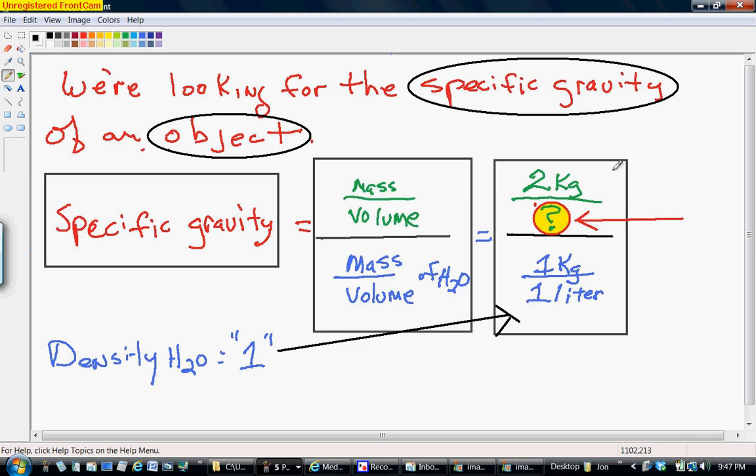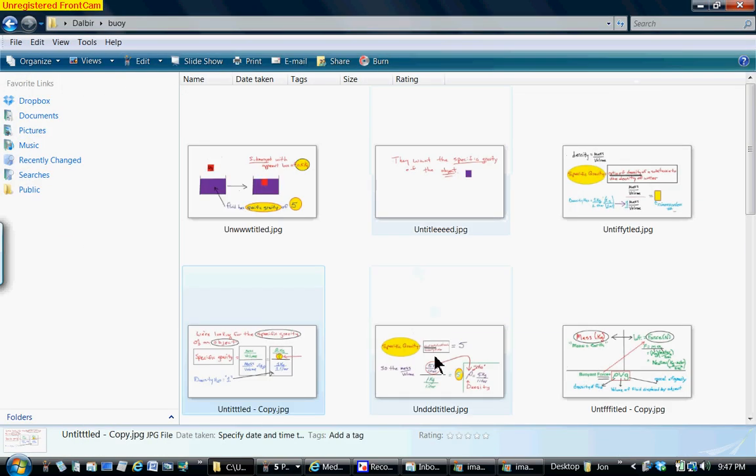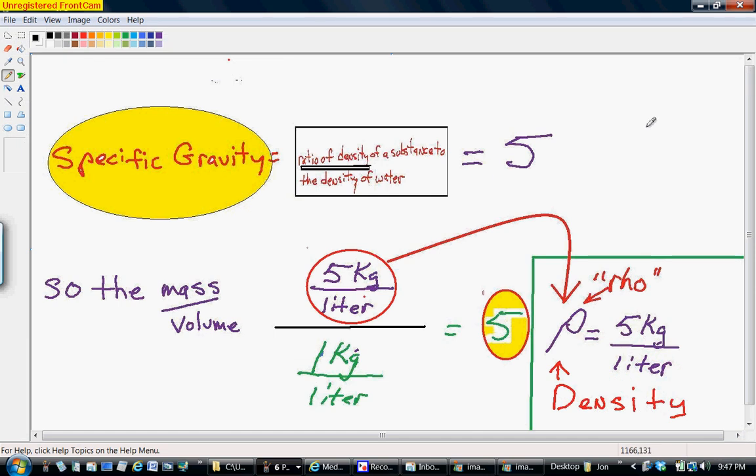We need to use the buoyant force equation. Archimedes principle is the buoyant force equation, and we'll go into that in a few minutes. But let's first get some other information that we can squeeze out because we'll need it for the Archimedes principle or buoyant force equation. Specific gravity of the unknown fluid is five, so we can get some density information out of that. Remember that it's mass over volume with water as a reference. So if the ratio is five, then the density of the fluid is going to be five kilograms per liter. And rho, the Greek letter rho, which kind of looks like an italicized p, is our symbol for density that's seen in physics.